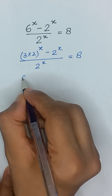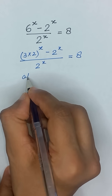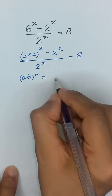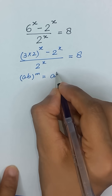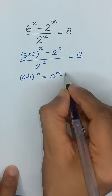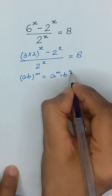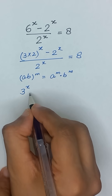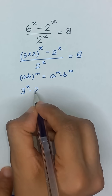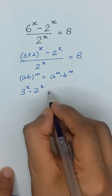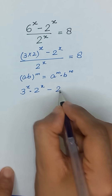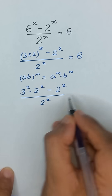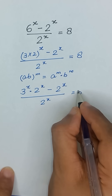As we know that (a times b) to the whole power m is equal to a to the power m times b to the power m. So it will become 3 to the power x times 2 to the power x, minus 2 to the power x, divided by 2 to the power x, is equal to 8.